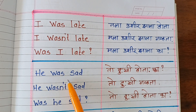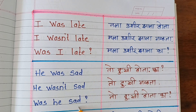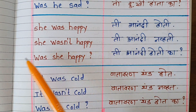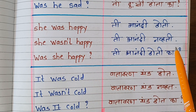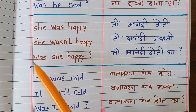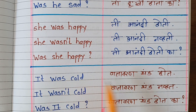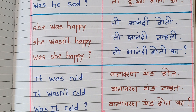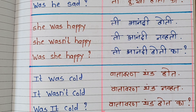He was sad. He wasn't sad. He was sad. She was happy. Was she happy? It was cold. It was cold. Was it cold? For I, he, she, and it, we can use this simple sentence in positive or negative question form.